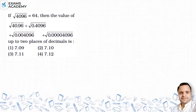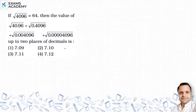Hello friends, we are going to solve this problem. The question is: if √4096 = 64, then find the value of √40.96 + √0.4096 + √0.004096 + √0.004096, up to two decimal places.